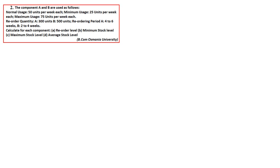We will take up the next question. Components A and B have the following information — each: normal usage 50 units per week, minimum usage 25 units per week, maximum usage 75 units per week. Reorder quantity: A = 300 units, B = 500 units. Reorder period: A = 4 to 6 weeks, B = 2 to 4 weeks. We are required to calculate reorder level, minimum, maximum, and average stock level for each component.